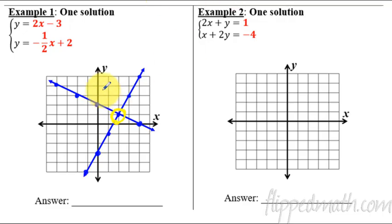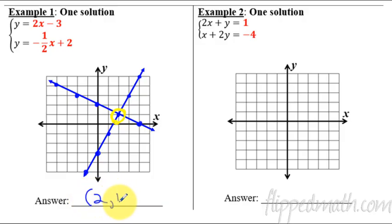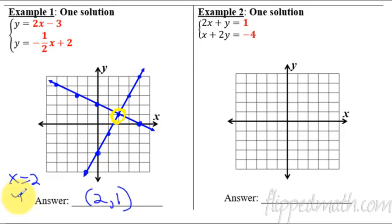So we're not done by just graphing it. We then have to come down here and say the ordered pair of two comma one. We have to name that intersection point — that's the answer. So you could say x equals two, y equals one, but that saves us some time to just write it as a coordinate point.